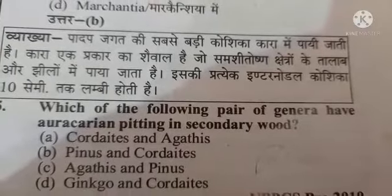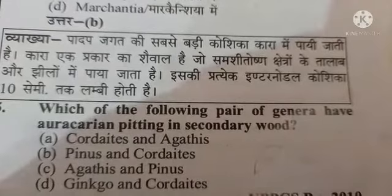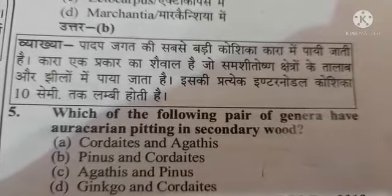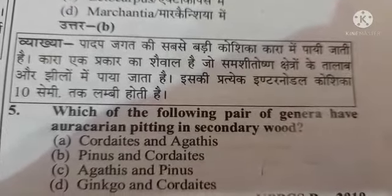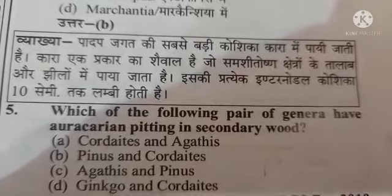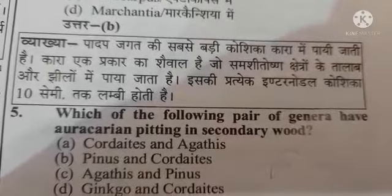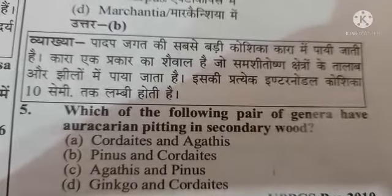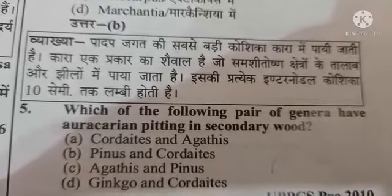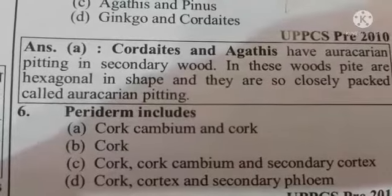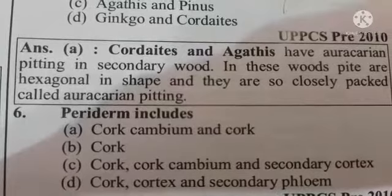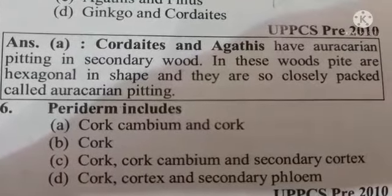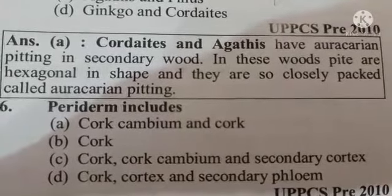Next question: which of the following pairs of genera have araucarian pitting in secondary wood? Option A Cedrus and Agathis, option B Pinus and Cedrus, option C Agathis and Pinus, option D Ginkgo and Cedrus. The right answer is option A, Cedrus and Agathis. Next question: periderm includes option A cork cambium and cork, option B cork only, option C cork cambium and secondary cortex, option D cork, cortex and secondary phloem.